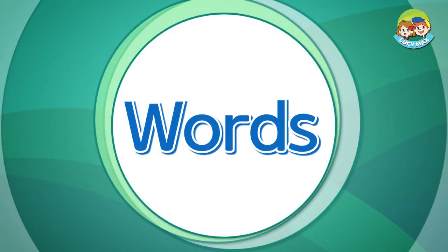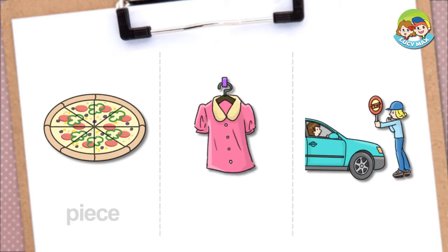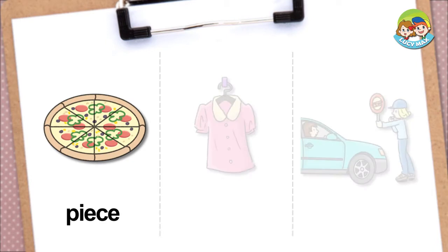Let's study some words to begin. A piece of something is a part of it. The picture shows a pizza. It has eight pieces. Do you like pizza? How many pieces can you eat?